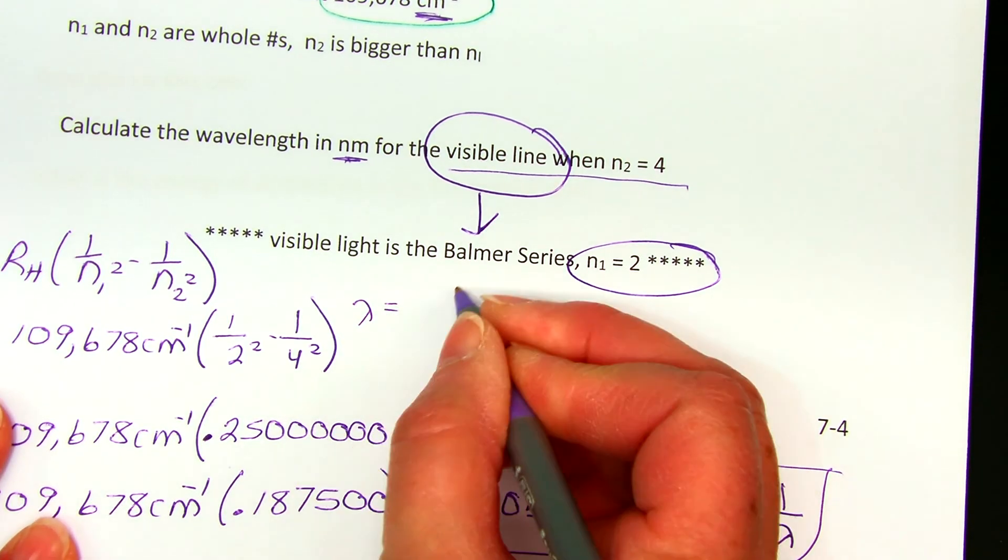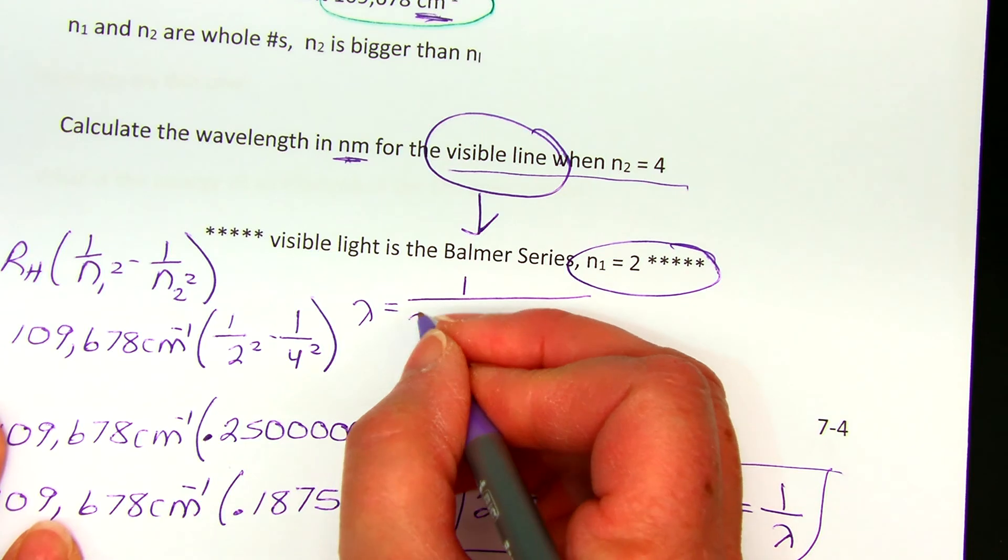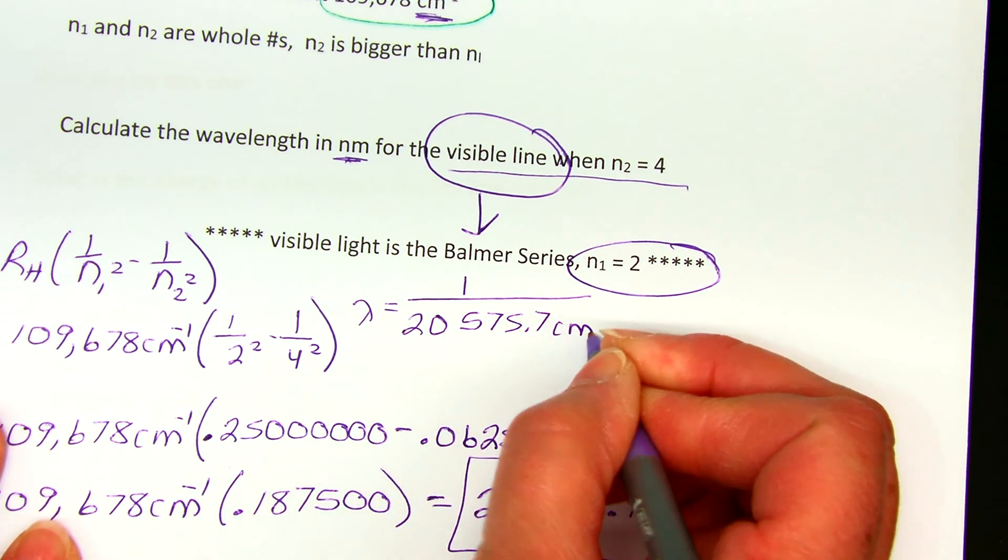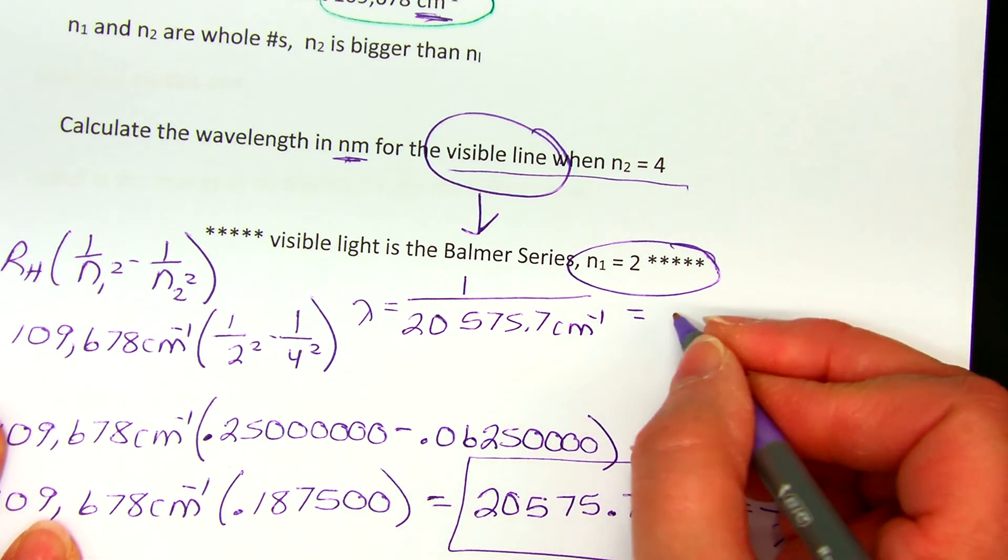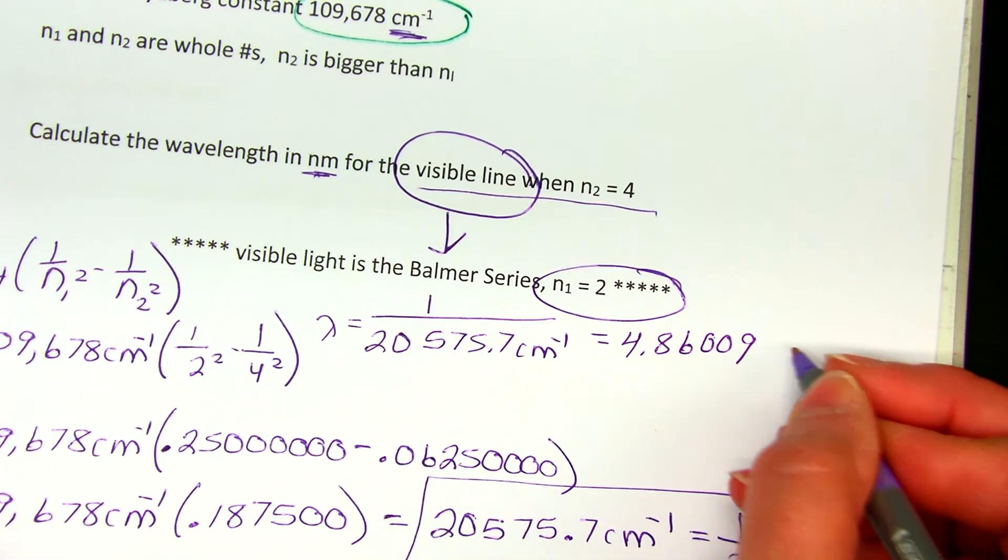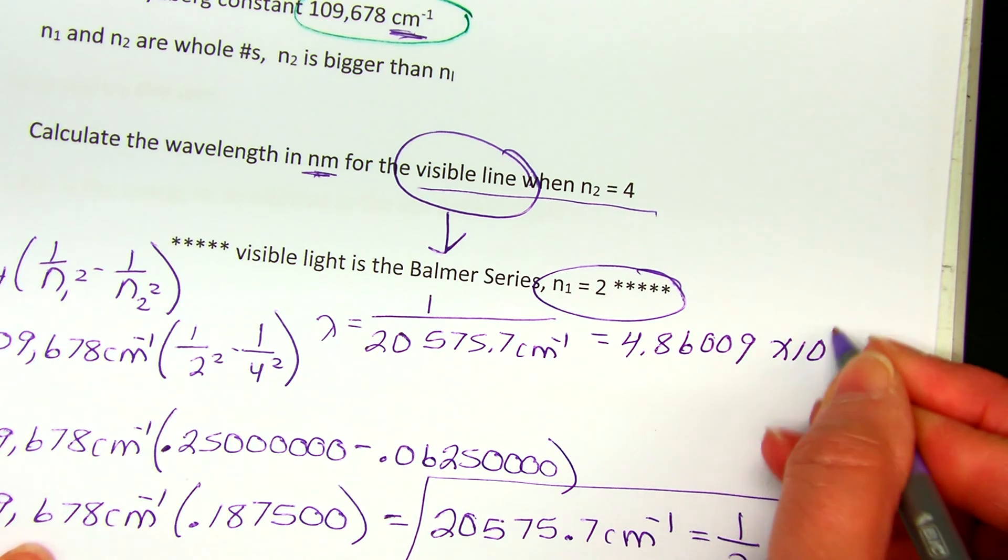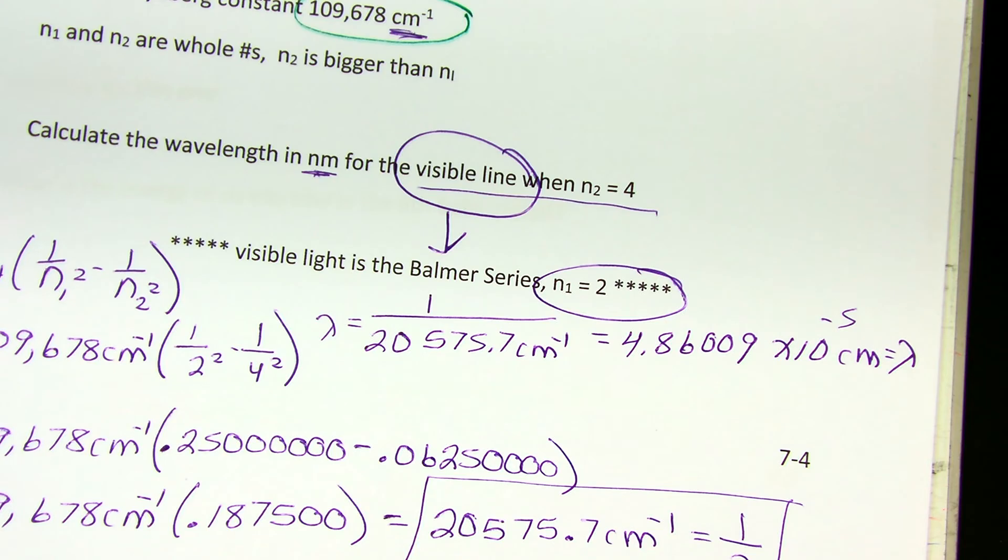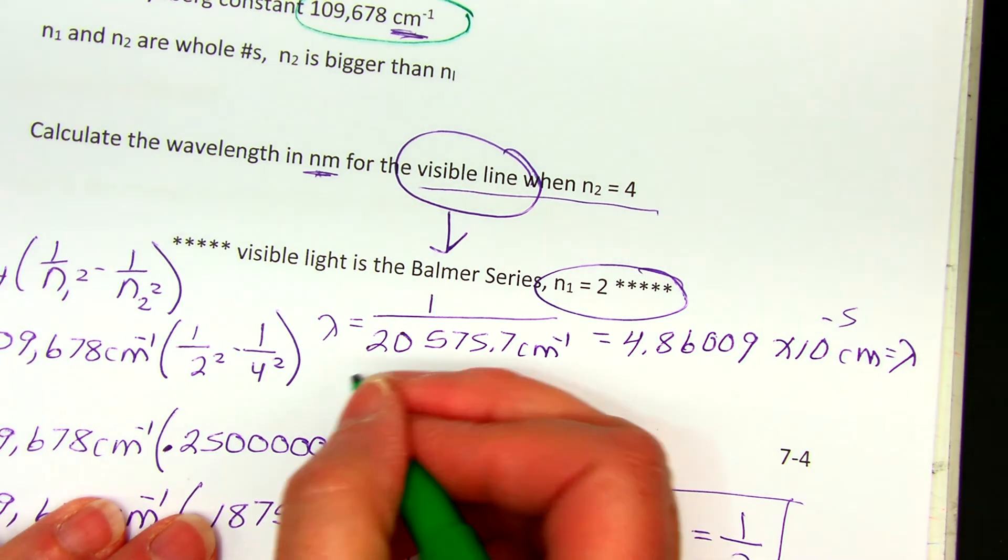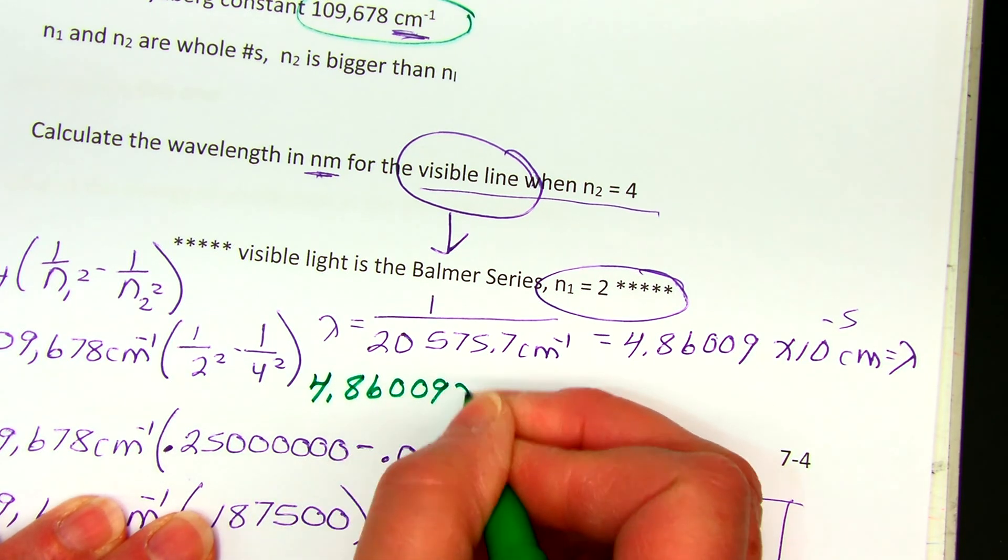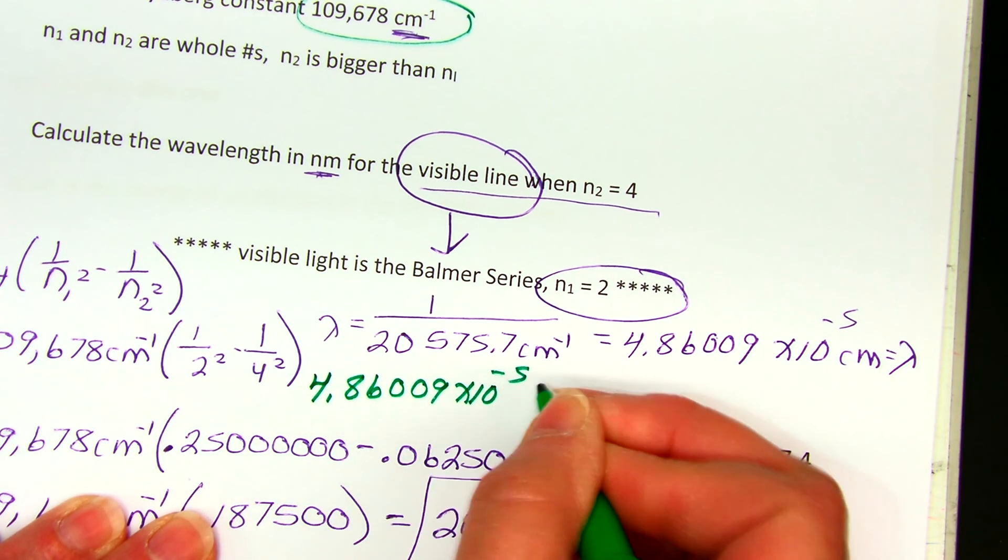I need to take the reciprocal, and then I have to change that into nanometers from centimeters. So lambda is 1 over 20,575.7 reciprocal centimeters. That is equal to 4.86009, six significant figures, times 10 to the negative fifth centimeters. That's my wavelength, and I'm still not done because I want this in nanometers.